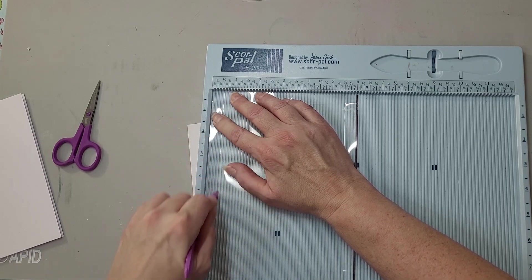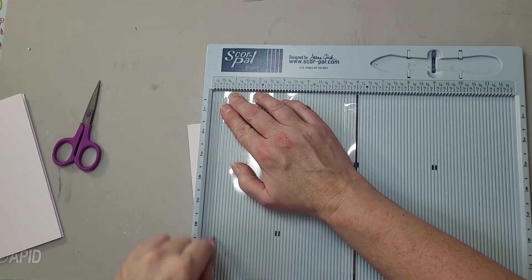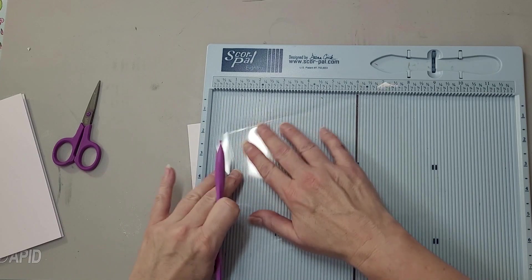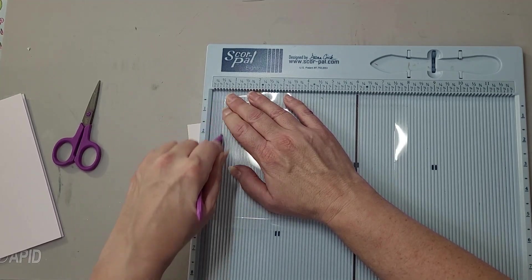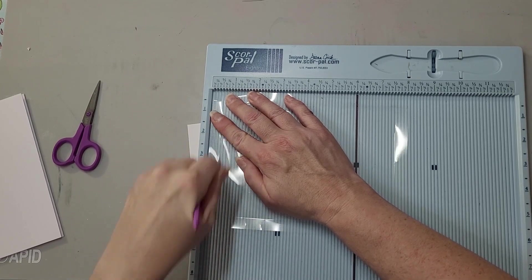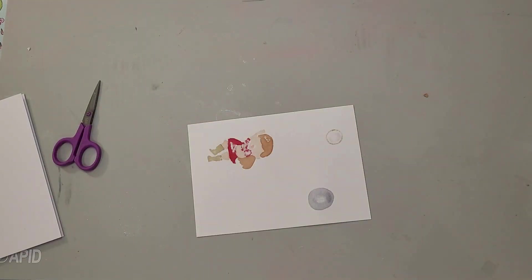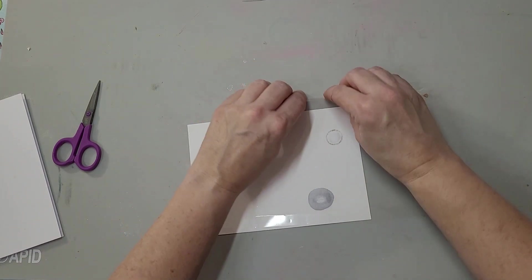Remember, this is at a half inch all the way around, and I just want to give it a really deep score. It'll just be easier to fold that way. There we go, now it's a lot easier to fold.